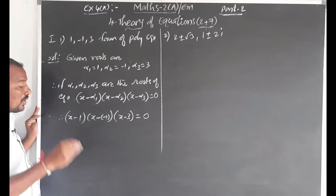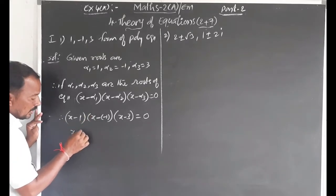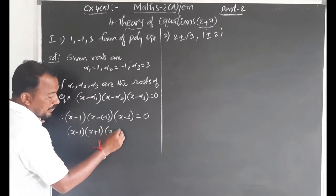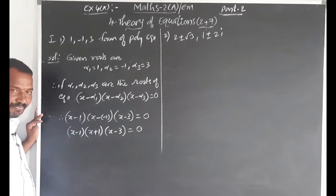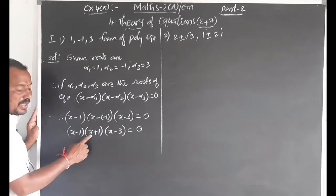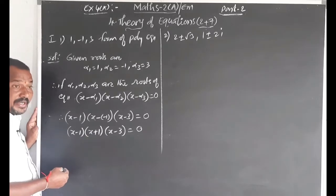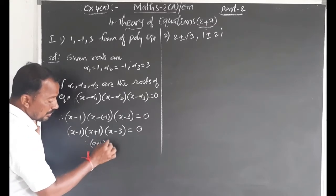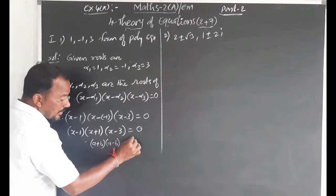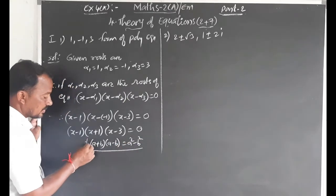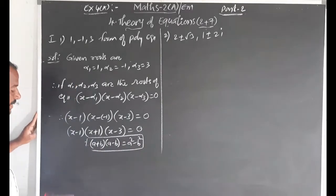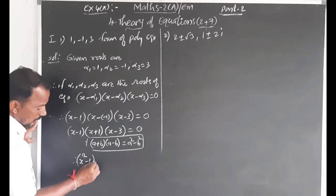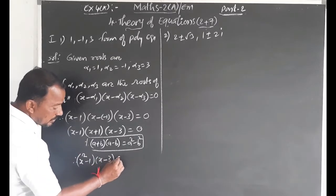Simplify: (x - 1)(x + 1)(x - 3) = 0. Using the identity (a + b)(a - b) = a² - b², we get (x + 1)(x - 1) = x² - 1. Therefore: (x² - 1)(x - 3) = 0.